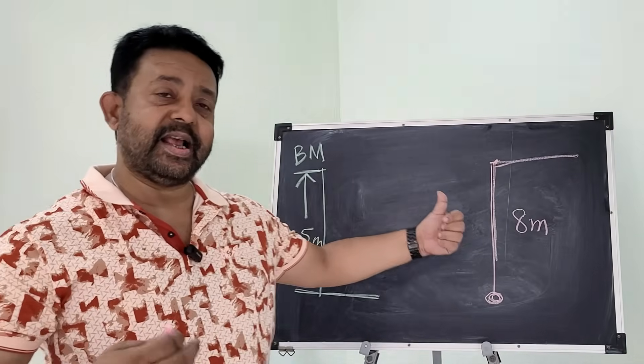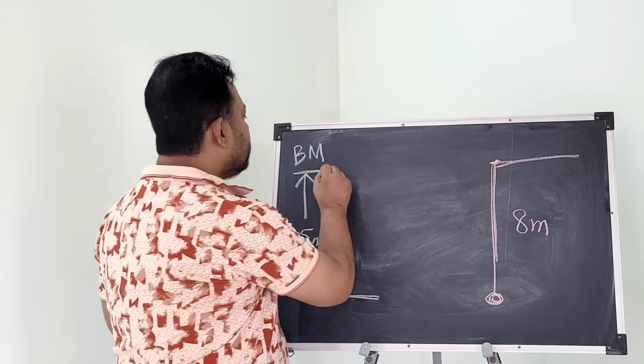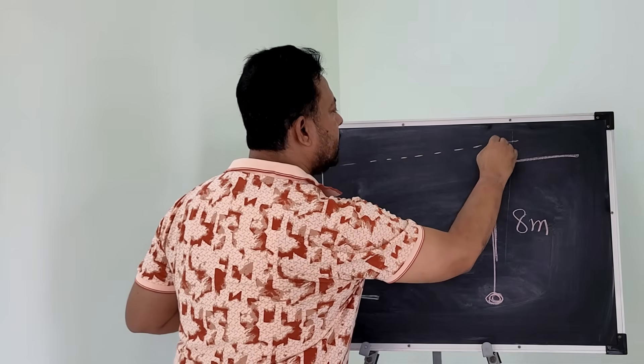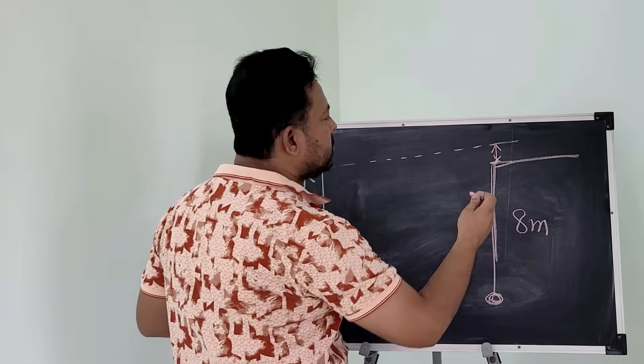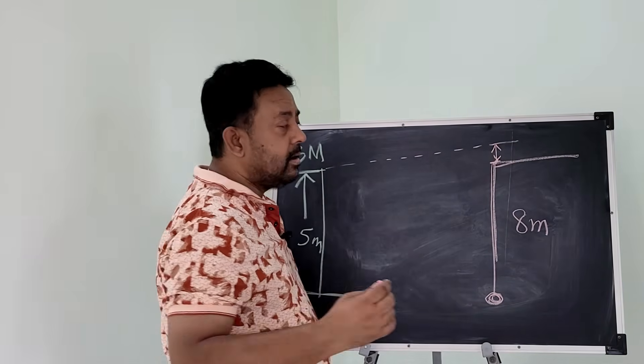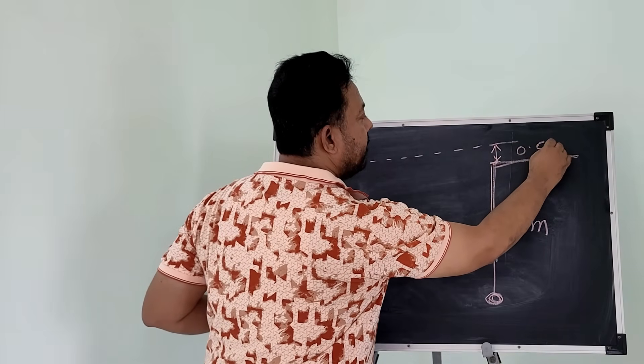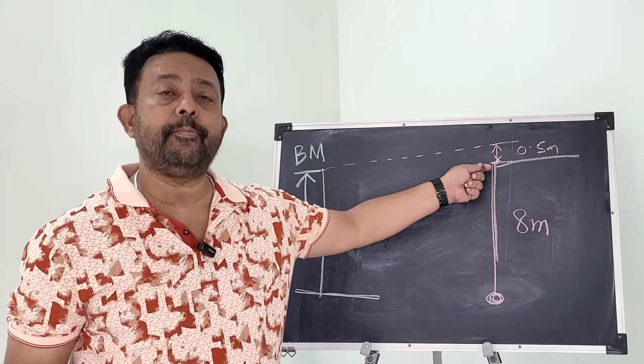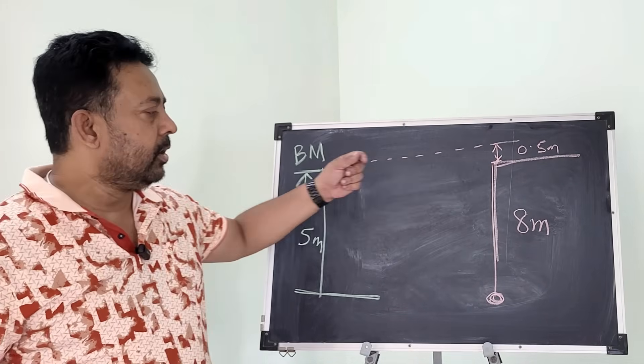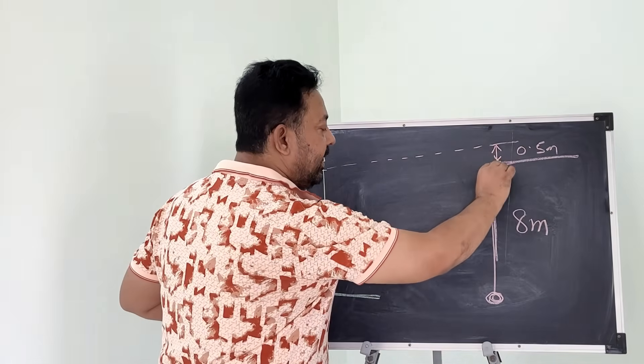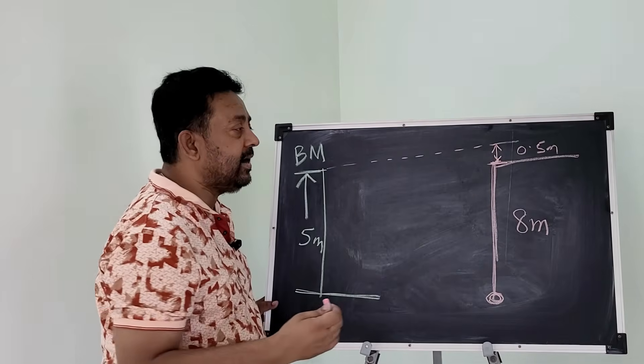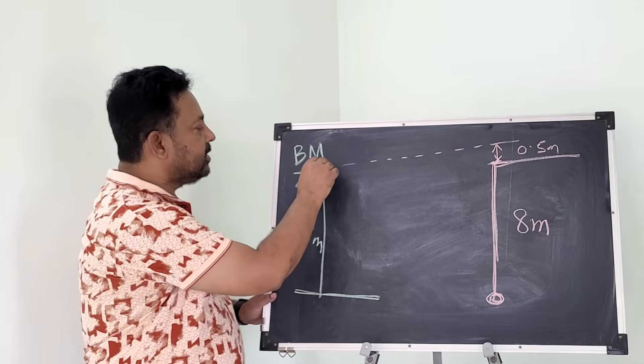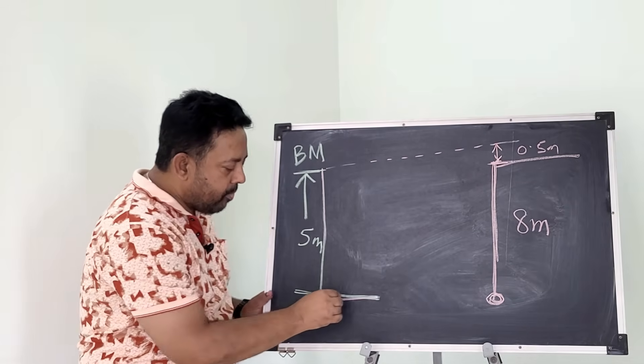Okay, so that is the second part. The next part that we need to do is to measure the height difference between our benchmark and the jetty point. Suppose the benchmark is higher by 0.5 meter. So now we know that the benchmark is higher than the jetty point by 0.5 meter, and my tide gauge is 8 meters. The zero of the tide gauge is 8 meters below the jetty, and I also know the 5 meters is from my benchmark to my datum.